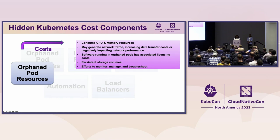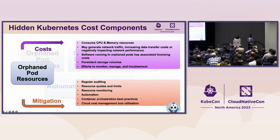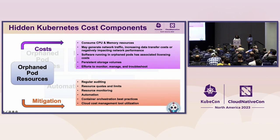To mitigate orphan pod costs, Little Cuddy suggests: regular auditing, implementing resource limits and quotas, monitoring and leveraging automation tools, being familiar with container orchestration best practices, and implementing cost management tools.